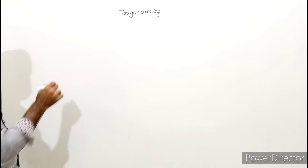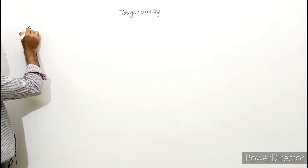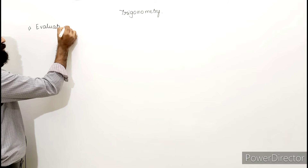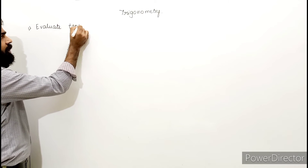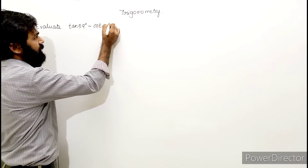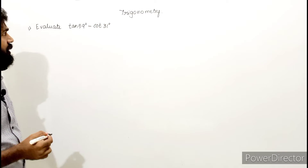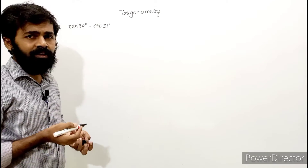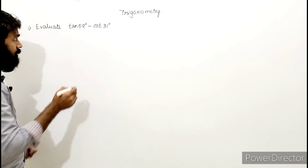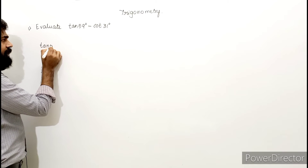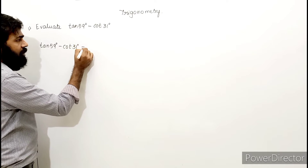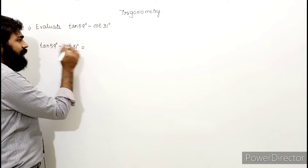Let's take the first problem: evaluate tan 59 degrees minus cot 31 degrees. The question is to evaluate tan 59 degrees minus cot 31 degrees. Let's work through this.